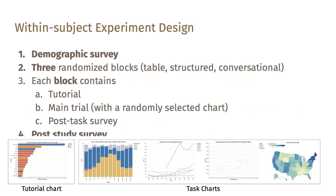Our study used a within-subject design. We began with a demographic survey, followed by 3 randomized blocks representing 3 experimental conditions: table, structured navigation, and conversational interaction. Each block started with a tutorial introducing the corresponding accessibility method. Next, the main trial presented a randomly selected chart from among four available chart types. After each trial, a post-task survey asked participants about their experience. Finally, a holistic post-study survey compared all three methods.